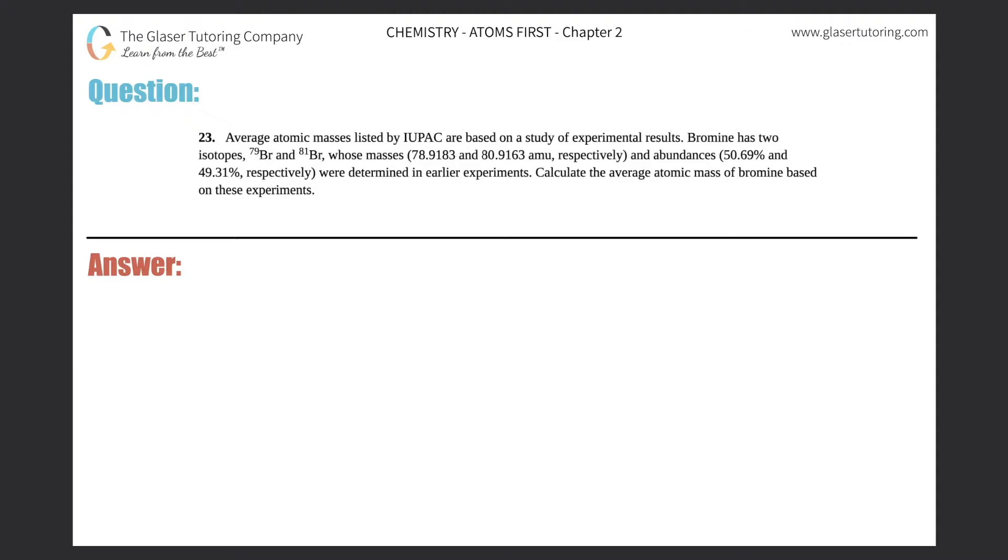Number 23. Average atomic masses listed by IUPAC are based on a study of experimental results. Bromine has two isotopes, Br-79 and Br-81, whose masses 78.9183 and 80.9163 AMU respectively, and abundances 50.69% and 49.31% respectively were determined in earlier experiments. Calculate the average atomic mass of bromine based on these experiments.